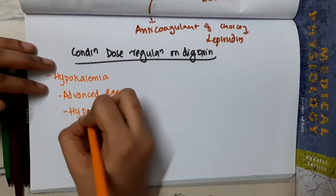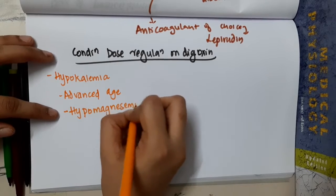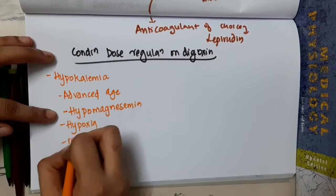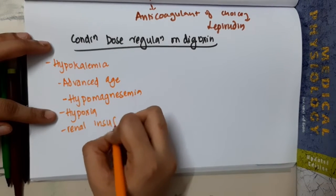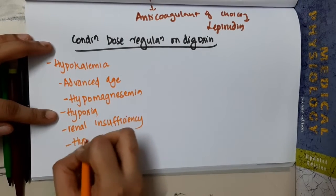Hypokalemia, hypomagnesemia, advanced age, hypoxia, renal insufficiency - it should be changed in renal insufficiency - then hypothyroidism.